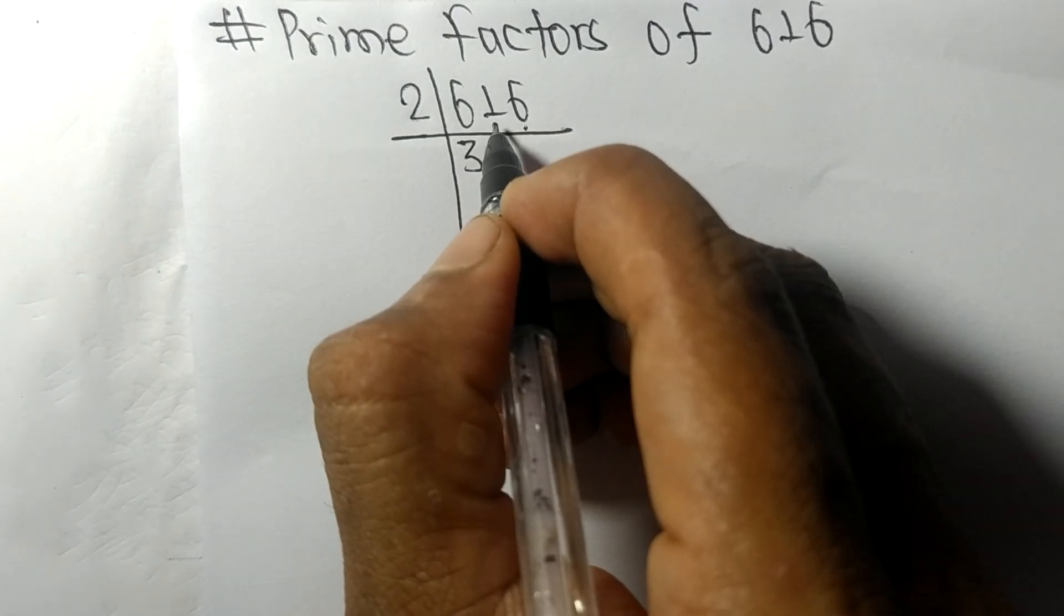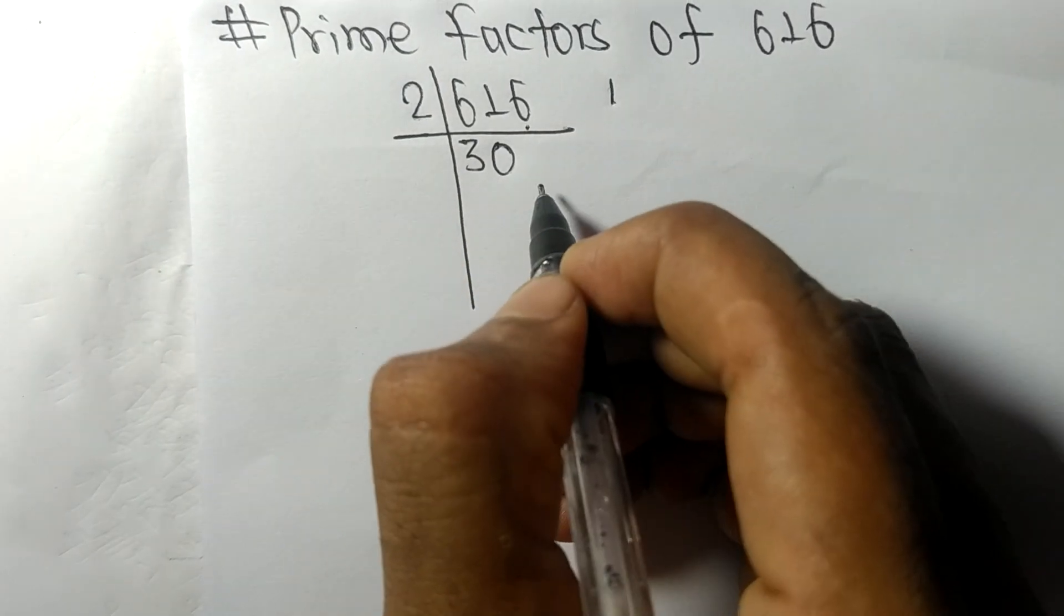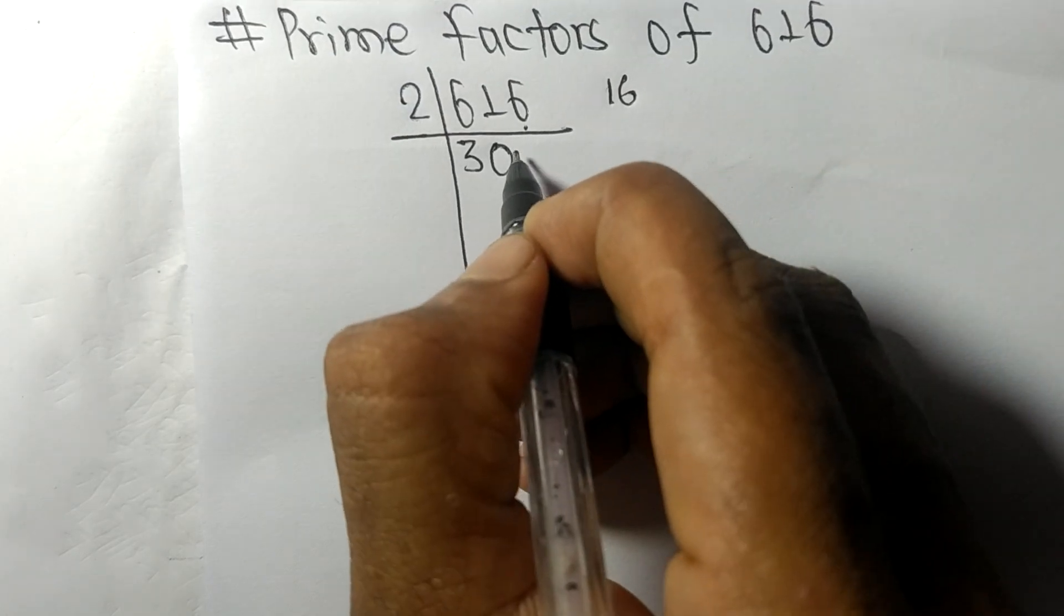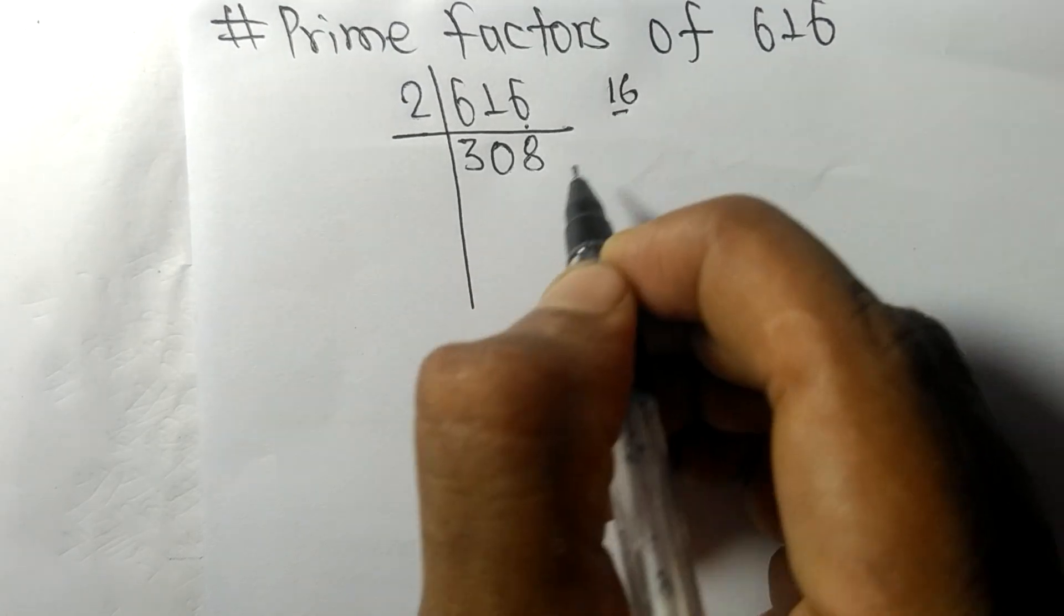Two times zero means zero remainder one, and this gives 616. Two times eight means sixteen.